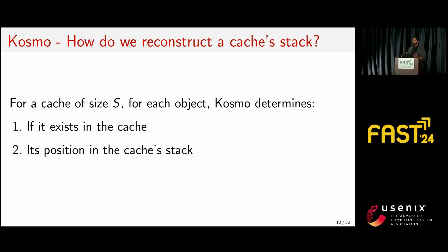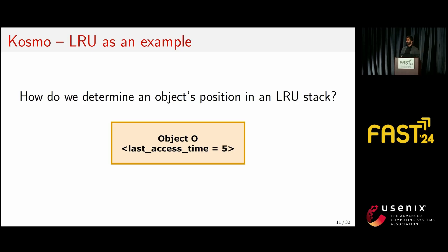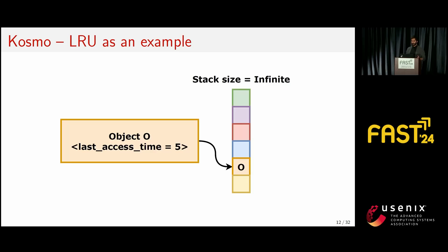With one shared copy of objects, how do we reconstruct a cache of a specific size? Given a target cache size, we iterate through all objects Cosmo has stored and determine two things: does the object exist in this cache, and if so, where is it in the cache's stack? For an infinite stack, objects are simply sorted from most recently used to least recently used by last access time. But when we limit the stack size — say, to 4 — we need to determine whether object O even exists in that cache. That requires more data.